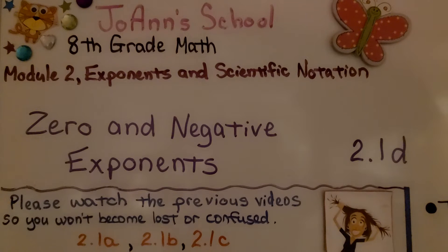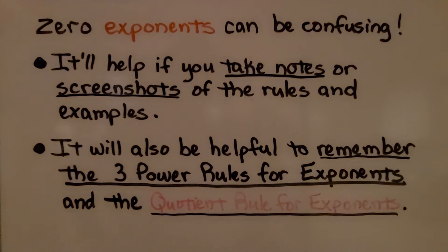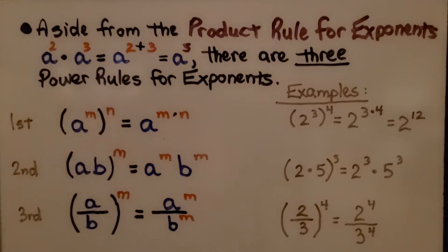Lesson 2.1d, Zero and Negative Exponents. Zero exponents can be confusing. It'll help if you take notes or screenshots of the rules and examples. It'll also be helpful to remember the three power rules for exponents and the quotient rule for exponents — we went over this in the last video. Let's review it.